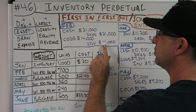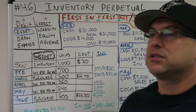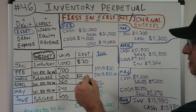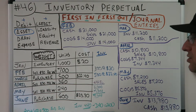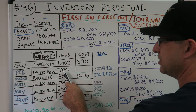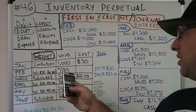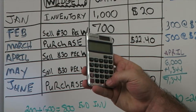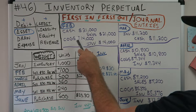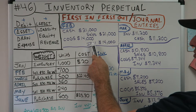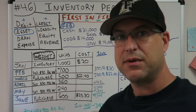Cost of Goods Sold is our expense, so it's a debit. We're taking the inventory off for how much it cost. Our $20,000 inventory was $20 a pop. We just sold 700 — how much did those 700 cost us? $20 each. So 700 times $20 equals $14,000. Debit Cost of Goods Sold $14,000, Credit Inventory $14,000. I know I'm going fast, but we've got a lot of information in this video.